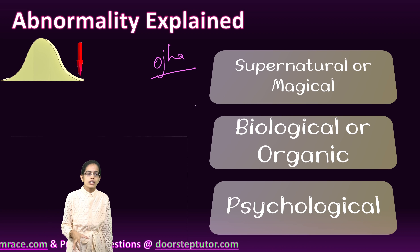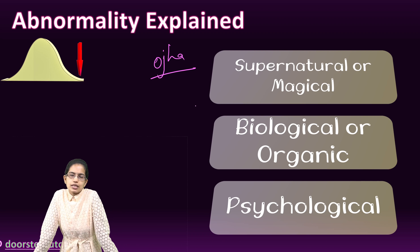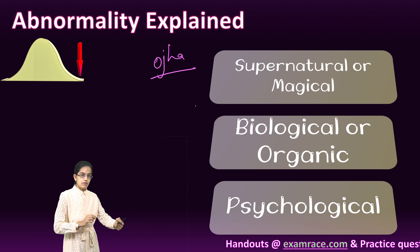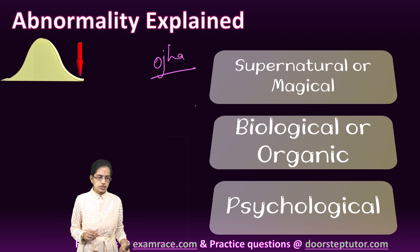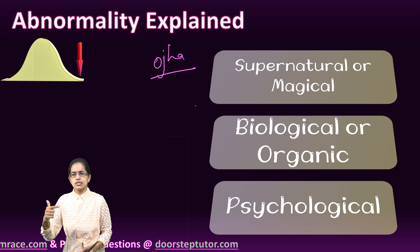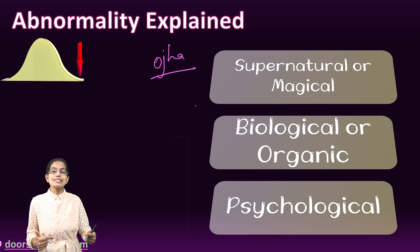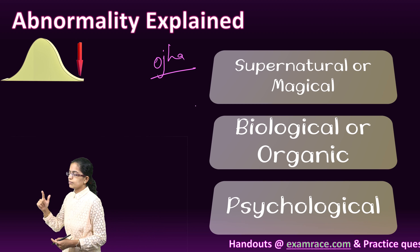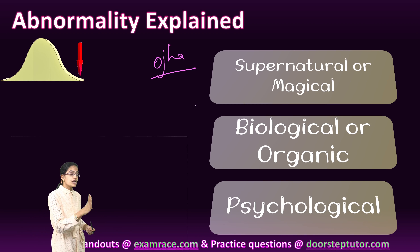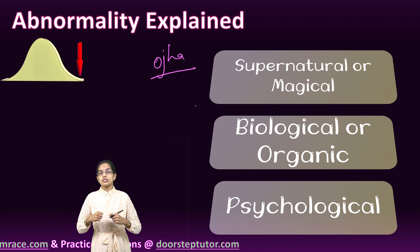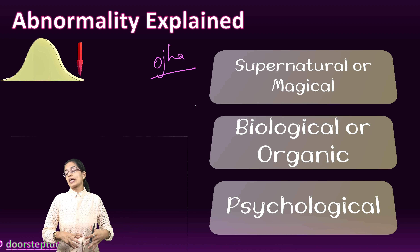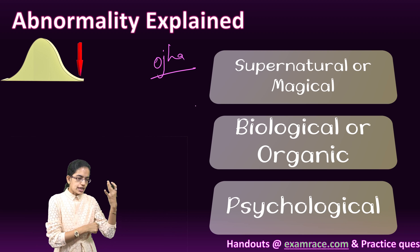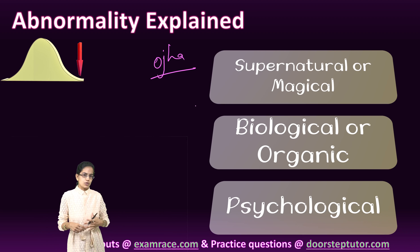The next explanation is the biological or organic approach, which says that deformities in our body and brain lead to maladaptive behaviors. If the biological cause is fixed, improvement in functioning is seen. The third is the psychological approach, caused by inadequacies in the learning process, thought process, feelings, and a fear of taking challenges. These inadequacies create psychological abnormalities.